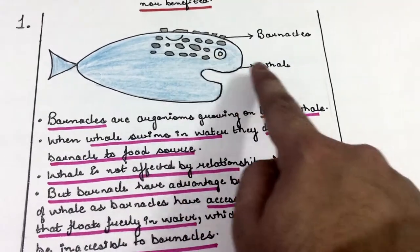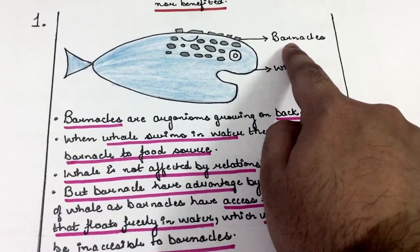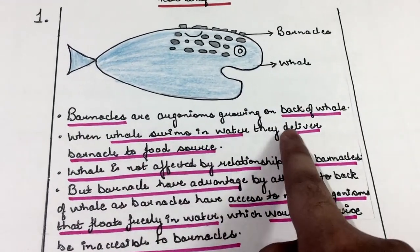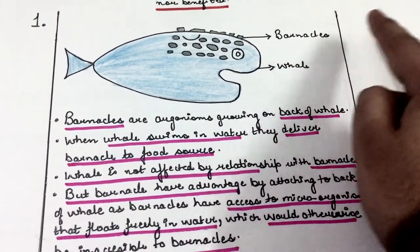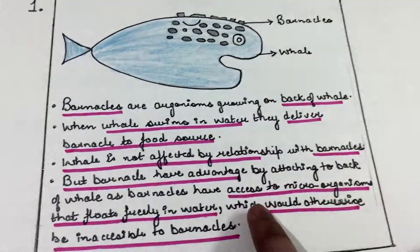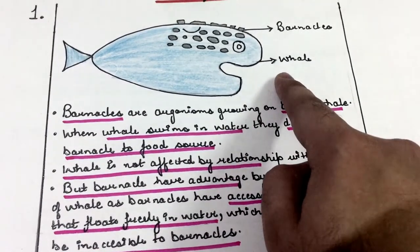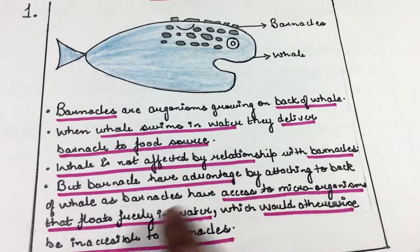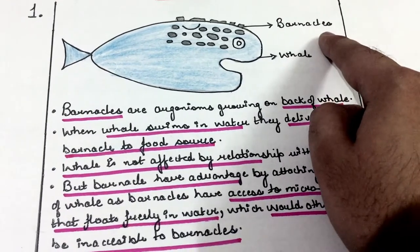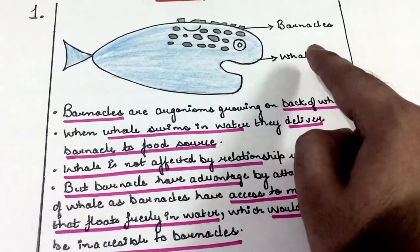Barnacles growing on the back of the whale is an example of commensalism. Barnacles are crustaceans which grow on the back of the whale. As the whale swims in water, it delivers these barnacles to the food source, giving them access to microorganisms that float freely in water, which would otherwise be inaccessible to the barnacles. The whale, however, is neither harmed nor benefited by the relation.